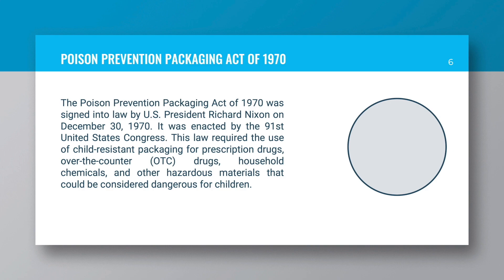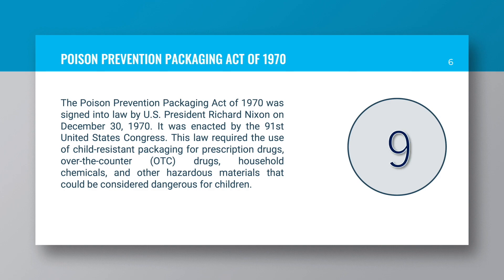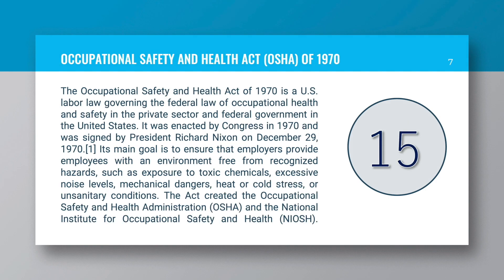The Poison Prevention Packaging Act of 1970 was signed into law by US President Richard Nixon on December 30, 1970. It was enacted by the 91st United States Congress. This law required the use of child-resistant packaging for prescription drugs, over-the-counter drugs, household chemicals and other hazardous materials that could be considered dangerous for children.